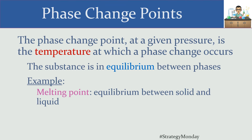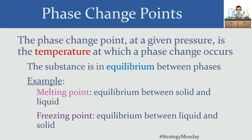The melting point represents the following: if our ice cube is melting, it's transitioning from solid to liquid. So at the melting point, that water is in equilibrium between the solid phase and the liquid phase. When a substance freezes, it goes from liquid to solid — and the freezing point is the point at which we're in equilibrium between the liquid and the solid phases.